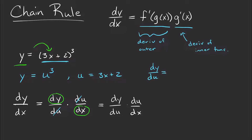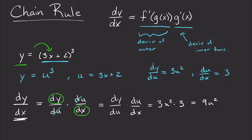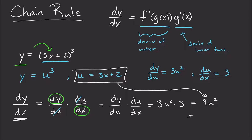dy/du: since y equals u cubed, that's just 3u². And du/dx is just 3. So plugging in, dy/du is 3u² times du/dx which is 3, giving us 9u². But we want the answer in terms of x, so we substitute u back in: 9 times (3x + 2), all squared. That is our derivative of the entire function y.